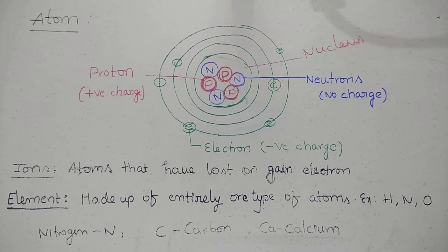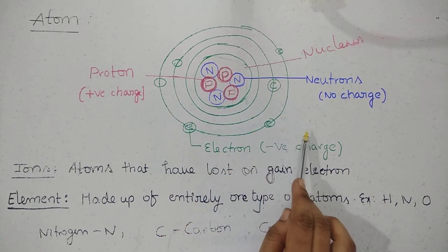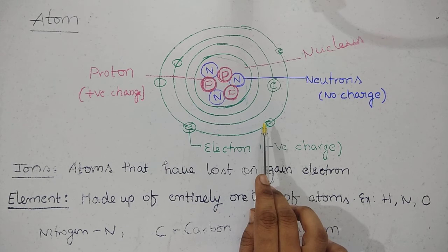Next, what is ion? Ion means any atom, if this atom lose one electron or gain one electron from another atom, that is called ion.